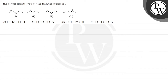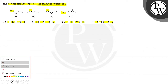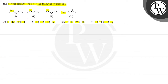Let's read this question. The question says: the correct stability order of the following species is. The species given here are carbocations. The options are: 2nd > 4th > 1st > 3rd; 1st > 2nd > 3rd > 4th; 2nd > 1st > 4th > 3rd; and 1st > 3rd > 2nd > 4th. So here we have to find out the stability of these species.